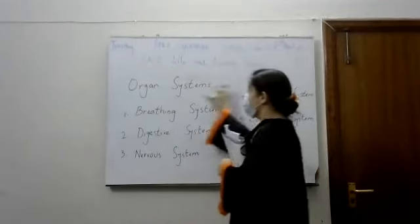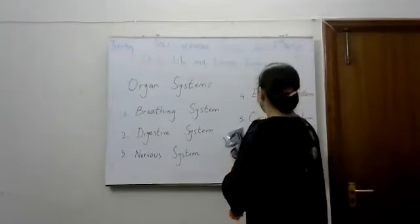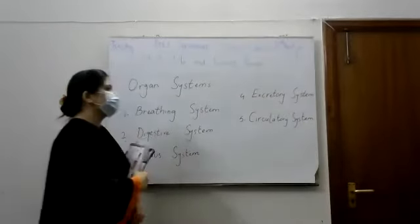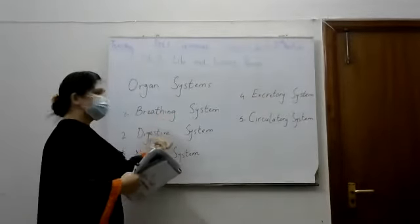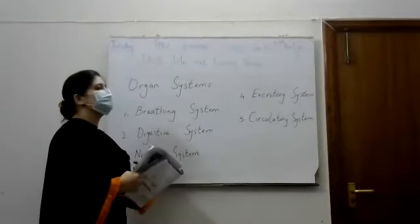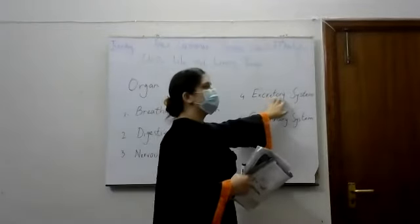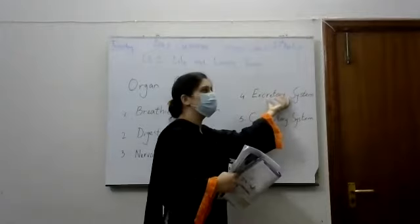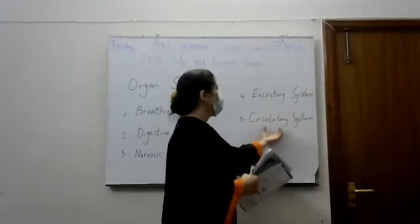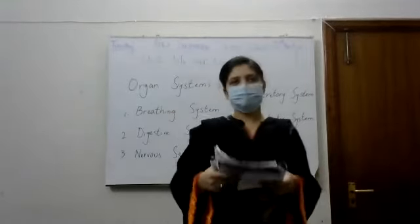These are the breathing system, digestive system, nervous system, and excretory system. The excretory system expels waste or poisonous substances. The circulatory system circulates the blood. The circulatory system carries nutrients to all parts of the body.